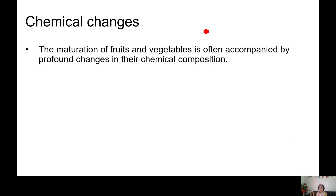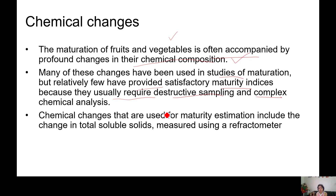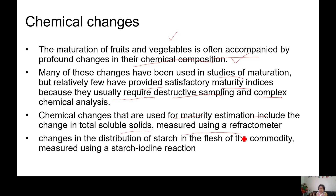Apart from texture, one can also identify the chemical changes taking place. The maturation of fruits and vegetables is often accompanied by profound changes in chemical composition, and many of these have been used in studies of maturation, but relatively few have provided satisfactory maturity indices because they usually require destructive sampling and complex chemical analysis. Chemical changes used for maturity estimation include the change in total soluble solids, which can be measured using a refractometer.